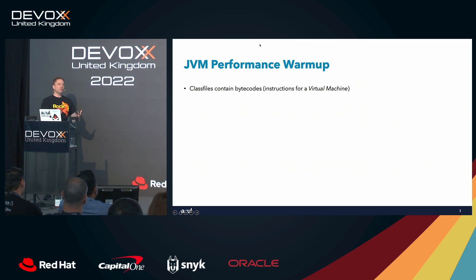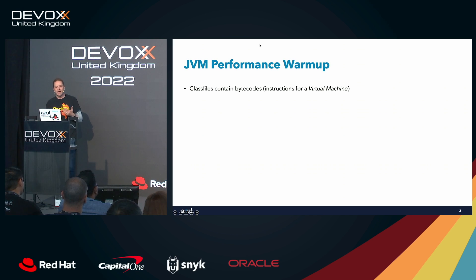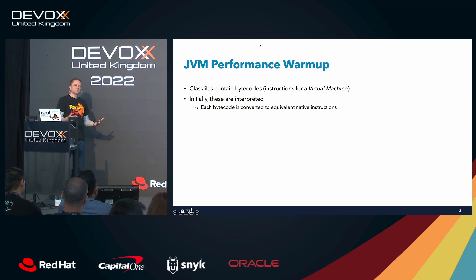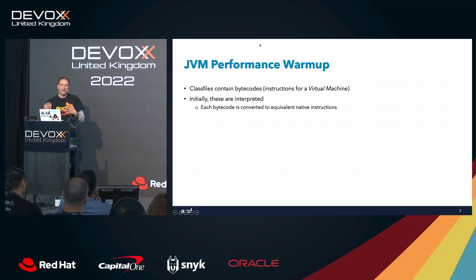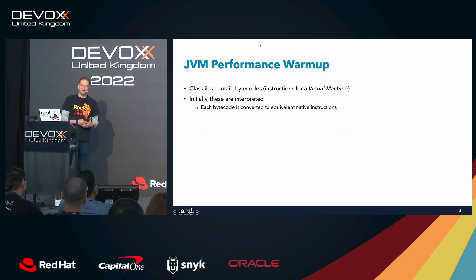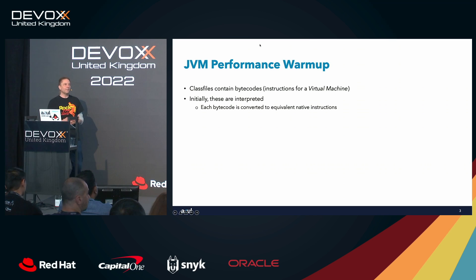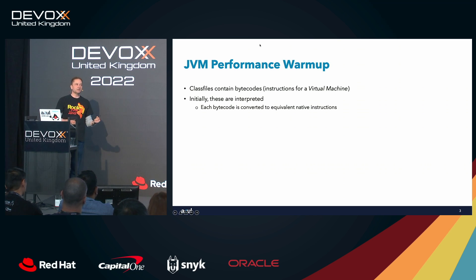The JVM doesn't come without cost. When we start applications, we deal with class files containing bytecodes — instructions for a virtual machine — that must be converted into native instructions for the platform we're running on. Initially, each bytecode is interpreted one at a time with no optimization. This is very inefficient, which is why early Java was always criticized as being slow compared to C and C++.